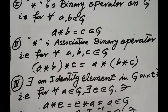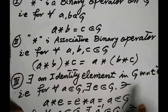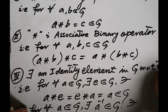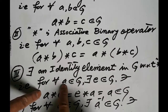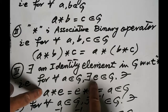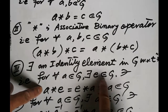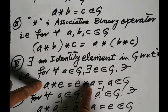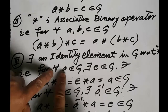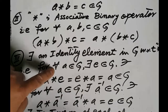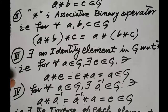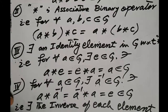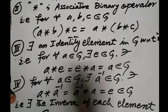The third condition is that there exists an identity element in the set G with respect to the binary operator star. That is, for each element a belonging to G, there exists a single element e in G such that a star e is equal to e star a is equal to a, for each a belonging to G. The element e is called the identity element.